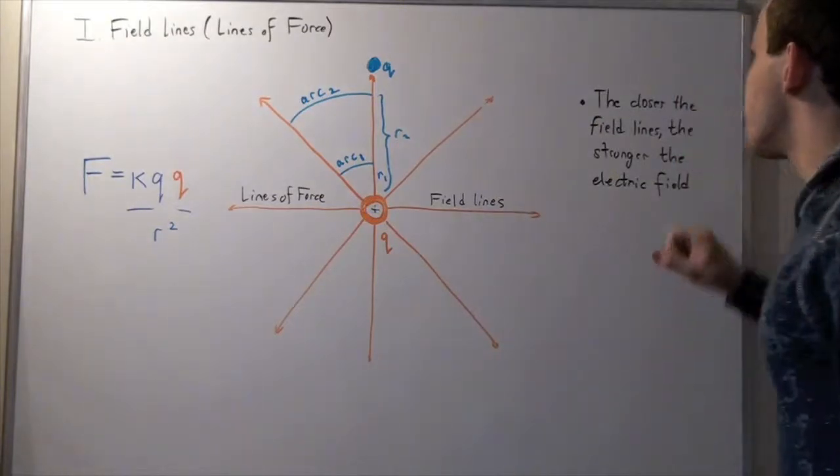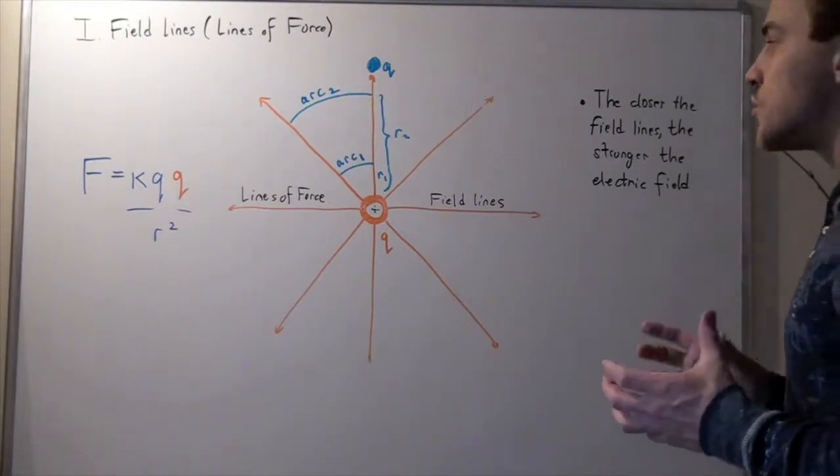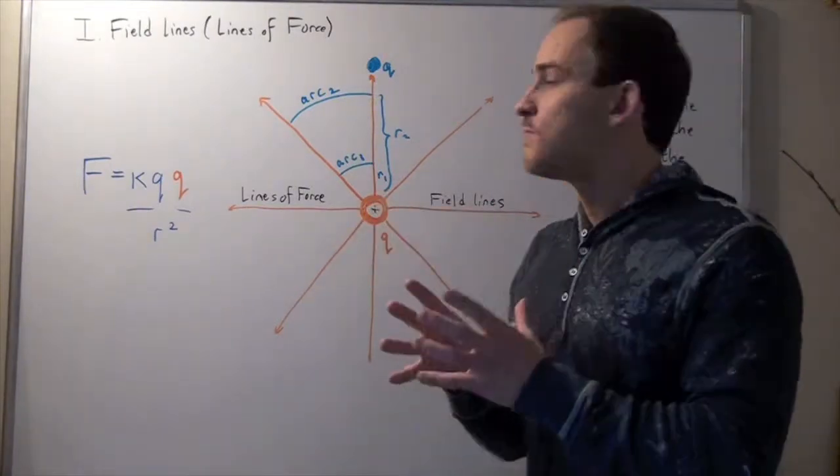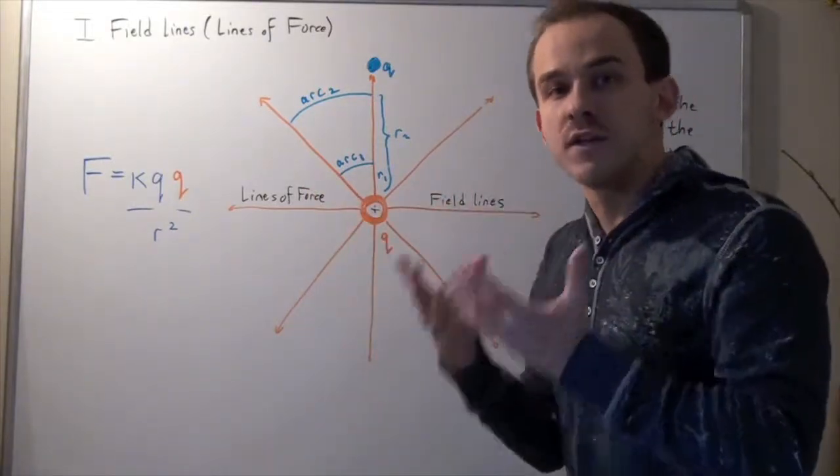And so, the point is the following. The closer the field lines are, the stronger the electric field. In other words, the more concentrated our field lines are, the closer they are together, the stronger our field.